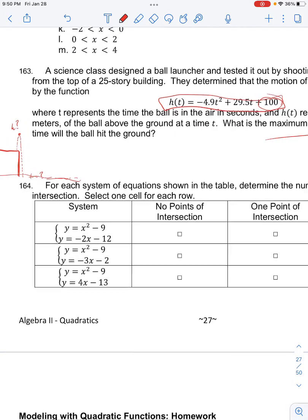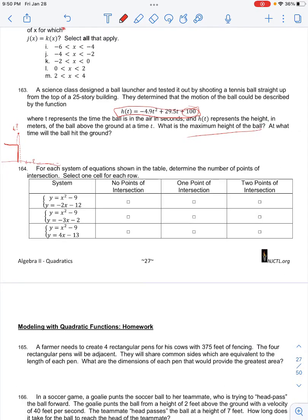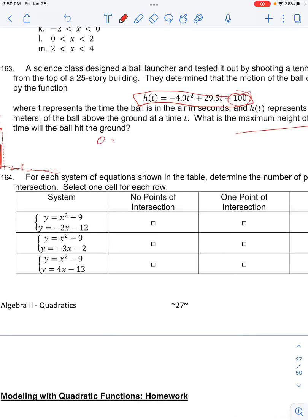This would be the zeros, meaning the time at where the ball touches the ground, so this is actually solving the second portion of the problem. We have 0 equals negative 4.9t squared plus 29.5t plus 100. We could factor, we could do completing the square, but I think easiest would be just to use quadratic formula. So we have t equals negative 29.5 plus or minus square root of 29.5 squared minus 4 times negative 4.9 times 100 over 2 times negative 4.9.